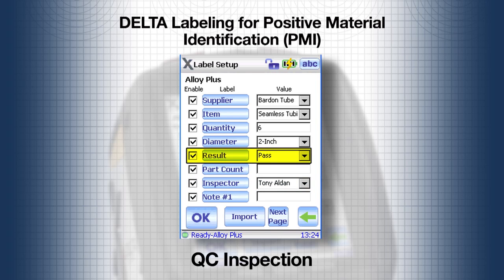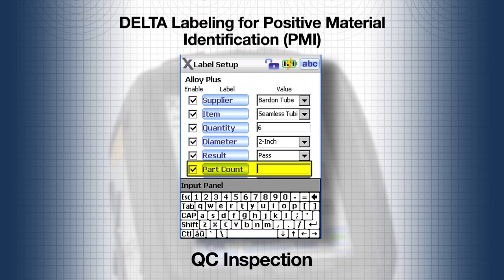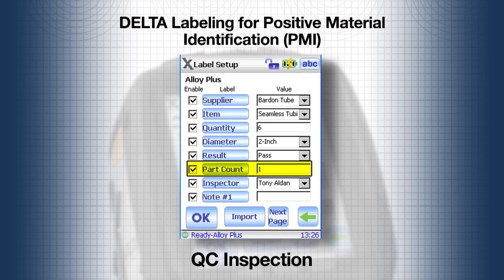Since the default result is passed, it can be left as is. If the item does not pass the test, this field can be changed after the test is completed. Regarding the part count, the Delta can count the number of parts being tested. Setting the part count to one means that the count will start at one. If the part count is left blank, the Delta does not provide a count.